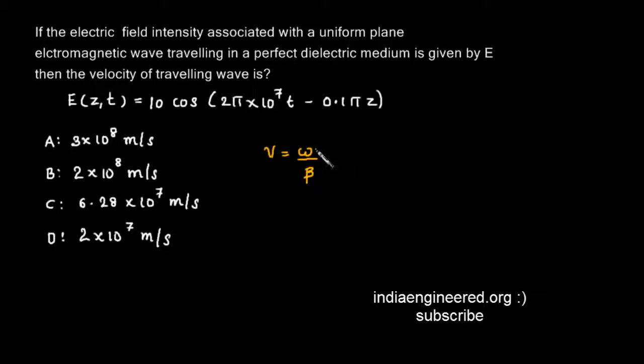To get omega and beta, we are given the expression for electric field. By comparing this equation with that of a standard wave, we can find out the value of omega and beta.